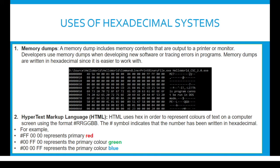Uses of hexadecimal systems. First: Memory dumps. A memory dump includes memory contents that are output to a printer or monitor. Developers use memory dumps when developing new software or to trace errors in programs. Memory dumps are usually written in hexadecimal since it is easier to work with. Here's an example of a memory dump — we can see that it is clearly much easier to read in hexadecimal than binary.